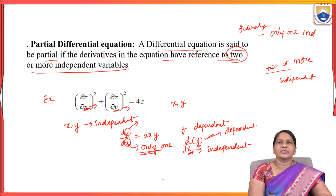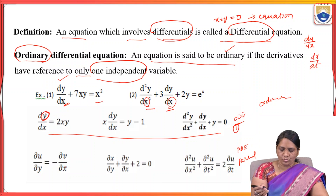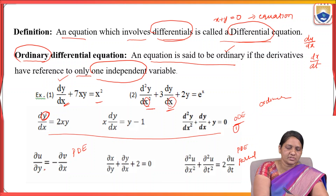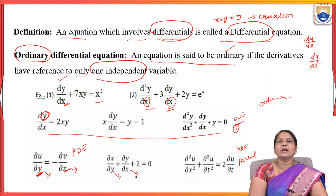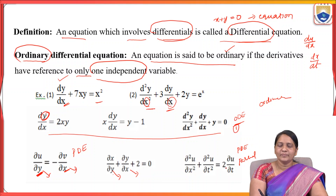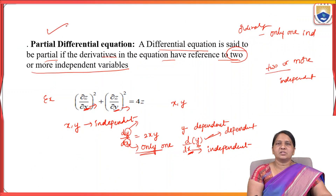More PDE examples: ∂u/∂y = −∂v/∂x has two independent variables y and x. Also ∂x/∂y + ∂y/∂x + 2 = 0 has both y and x as independent variables. And ∂²u/∂x² + ∂²u/∂t² = 2(∂u/∂t) has x and t both as independent variables — two or more independent variables means it is a partial differential equation.